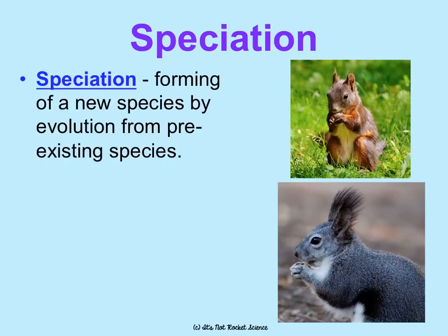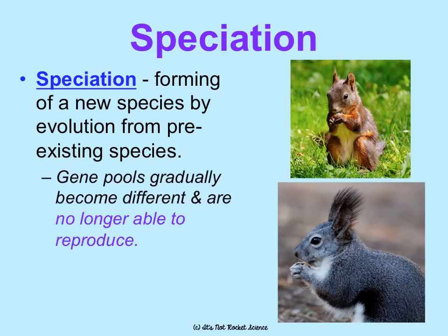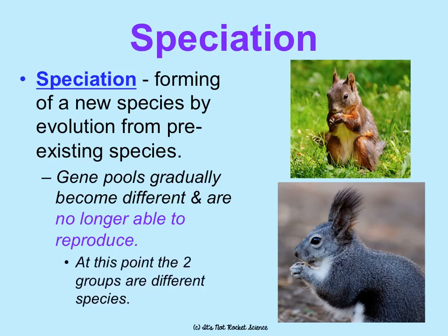First is speciation. This is the forming of a new species by evolution from a pre-existing species. Gene pools gradually become different, and they become so different that the organisms are no longer able to reproduce. At this point, we would say the two groups are different species.